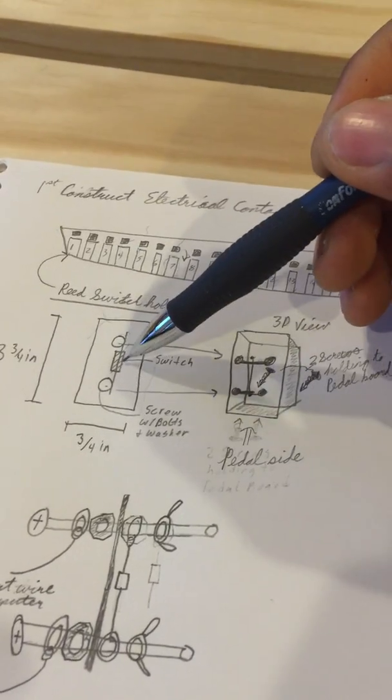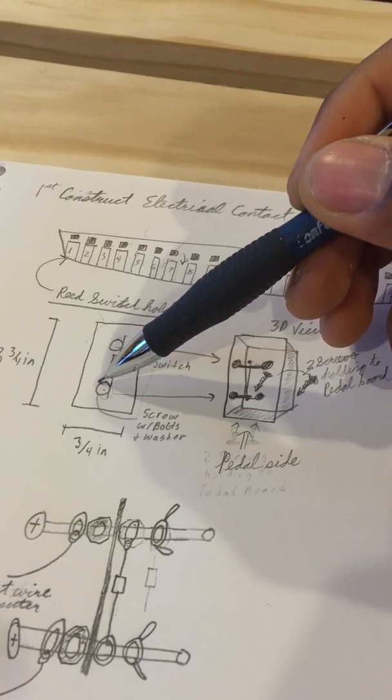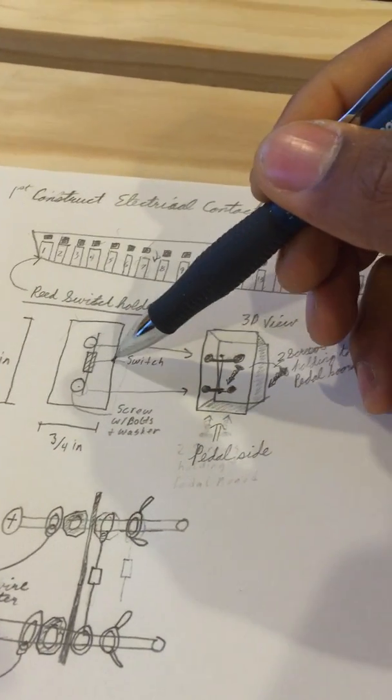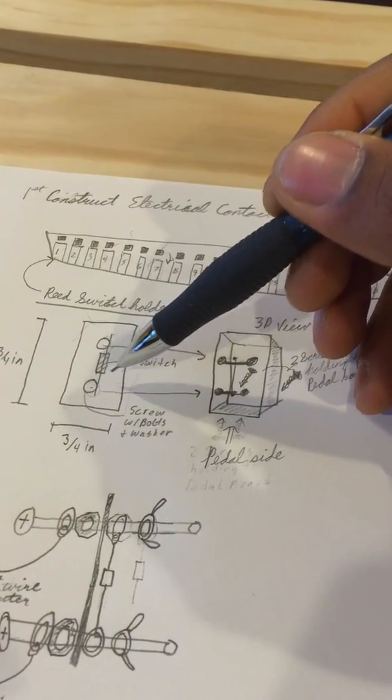This will be pressed downward, and then this will activate the switch which is over here. Here's our switch. We're going to have the switch held in place using two screws and some nuts to hold it in place. When you press the pedal down it will come down and then activate the switch.